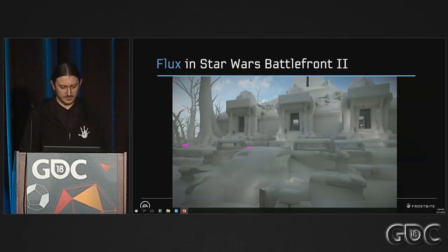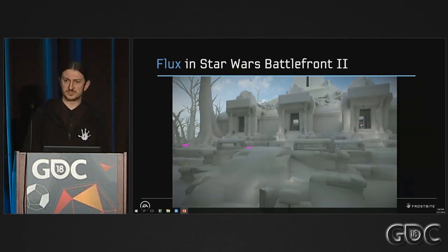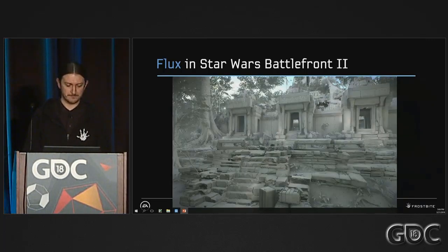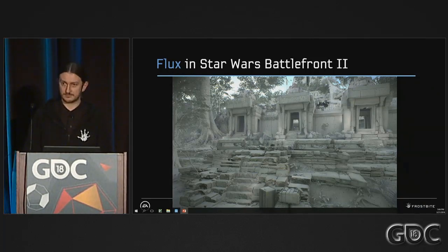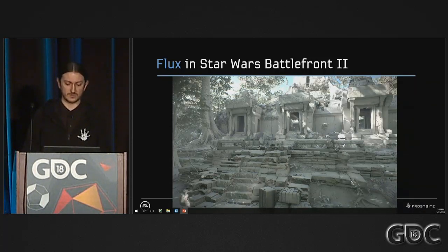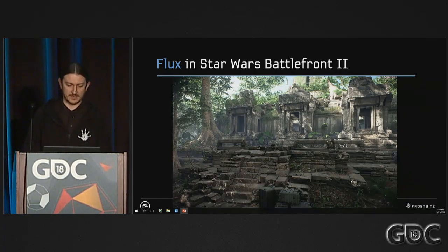A few more results from Star Wars Battlefront 2. Here we visualize a light map on proxy meshes that we use when we ray trace the scene to generate the light maps. This is the same scene but with the final meshes used in game with normal maps applied. And here you can see with the sun — direct light from the sun — which is the main contributor to global illumination in this scene. And that's the final result with everything applied, as you can see it in game.